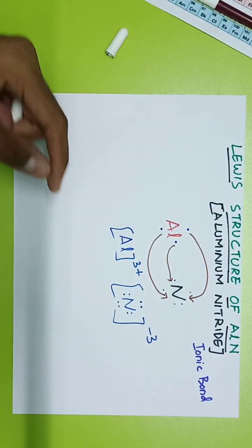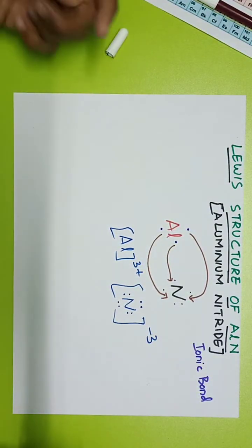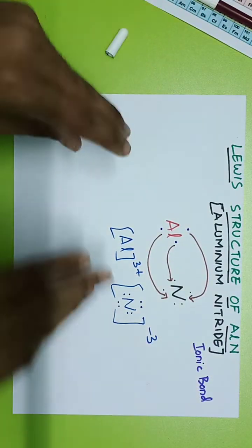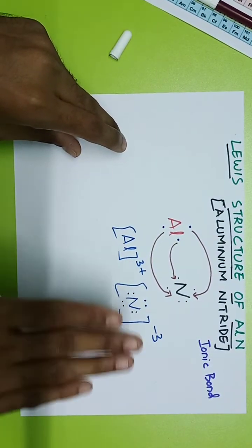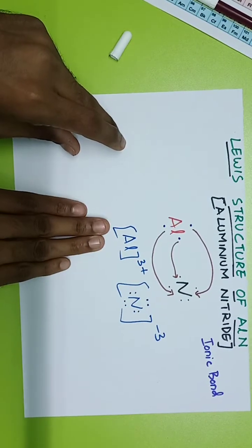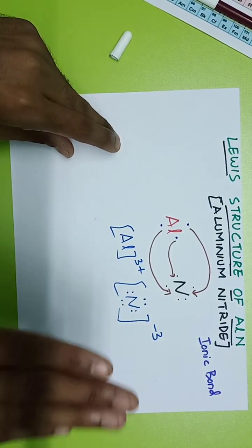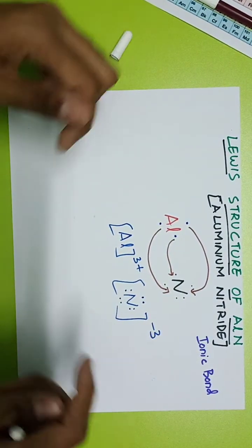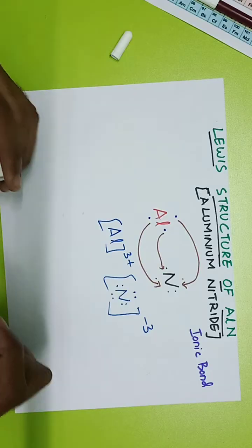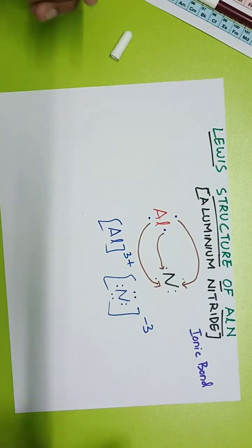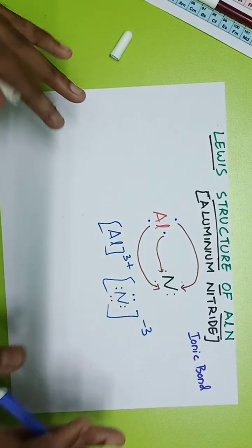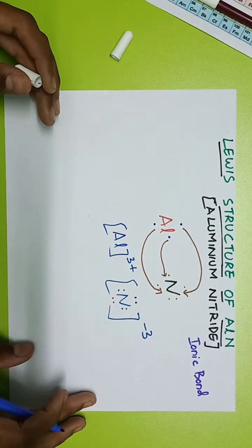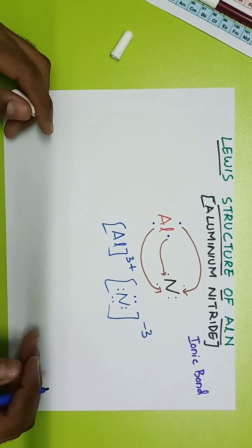Nitrogen has taken three electrons from aluminum, making it 3− charged. How many electrons it takes, that much negative; how much it gives, that much positive. Aluminum becomes Al³⁺ and nitrogen becomes N³⁻. This is what happens in the Lewis structure of aluminum nitride. Good luck, thank you!